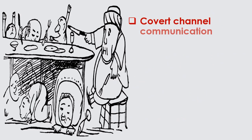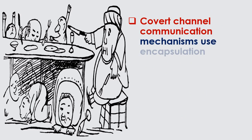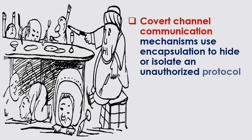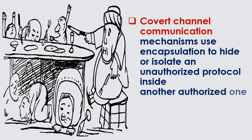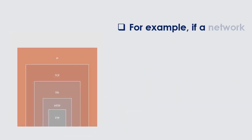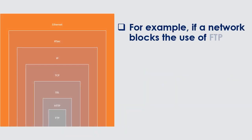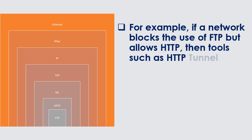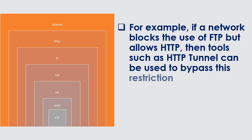Covert channel communication mechanisms use encapsulation to hide or isolate an unauthorized protocol inside another authorized one. For example, if a network blocks the use of FTP but allows HTTP, then tools such as HTTP tunnel can be used to bypass this restriction.